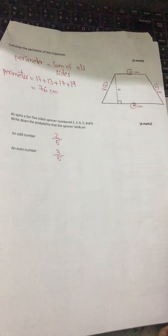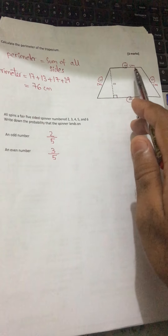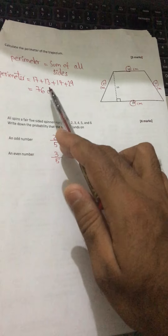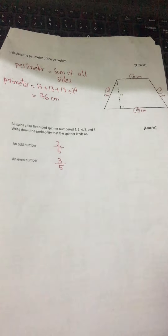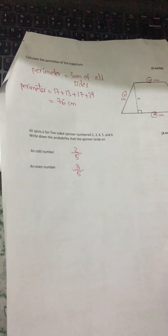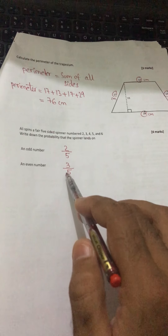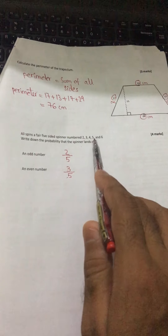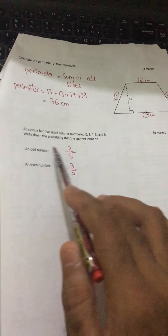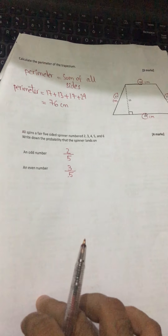On the last page, we have a trapezium and need to find its perimeter. Perimeter is the sum of all sides: 17 + 13 + 17 + 29 = 76 cm. The last question is about probability. The spinner has 5 sides, so the denominator is 5. There are 2 odd numbers (1 and 3), so the probability of landing on an odd number is 2/5. There are 3 even numbers (2, 4, 6), so the probability of an even number is 3/5.